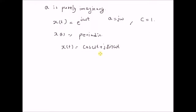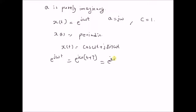So it is a combination of sinusoids. Note that even though a is purely imaginary, x(t) is a complex signal. From the definition, we can see that e^(jωt) equals e^(jω(t+T)), which again equals e^(jωT) times the original signal e^(jωt). That means the period of this signal is T, and e^(jωT) must equal 1.